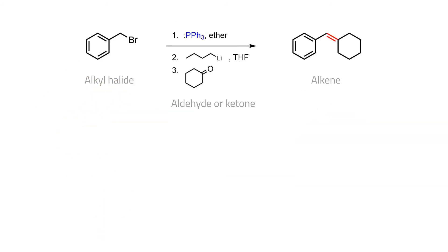The Wittig reaction is therefore a powerful method for making alkenes, in which an alkyl halide is converted to a phosphonium ylid, which subsequently undergoes a metathesis process with an aldehyde or ketone to give an alkene.